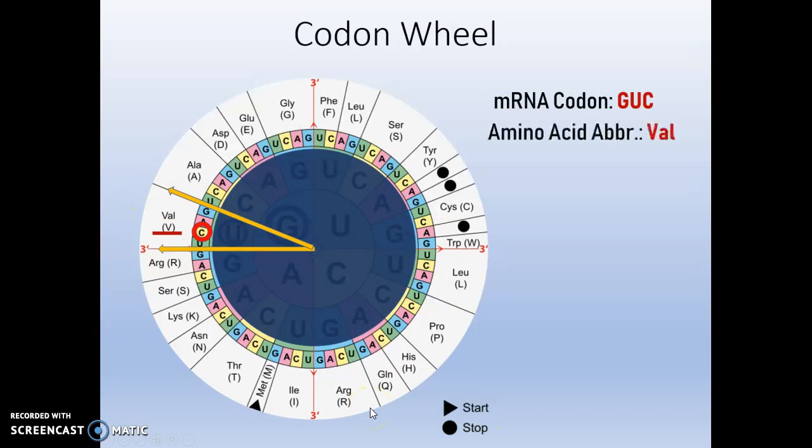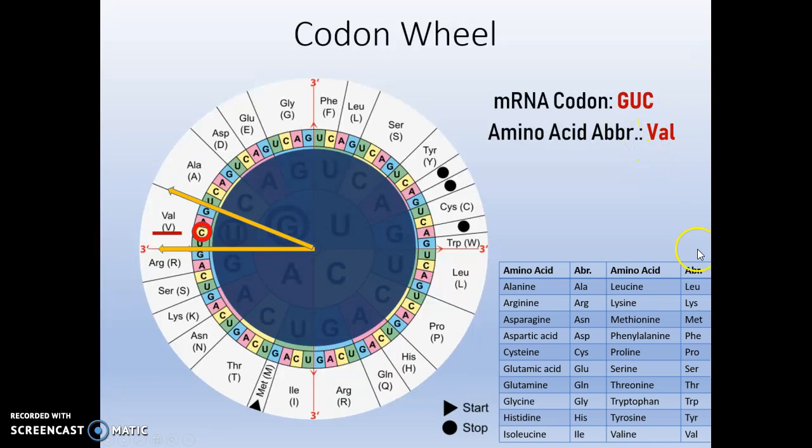In order for us to figure out the full name, we need to use our amino acid chart with the abbreviations. Thank goodness the abbreviations are in alphabetical order. VAL is here, and it stands for valine. I'm going to tell you that you do not have to memorize these amino acids and abbreviations. I will have a chart available for our quizzes and our exams. But by the time you're done with all of these translation activities, I think you're going to end up memorizing or just knowing a lot of them.